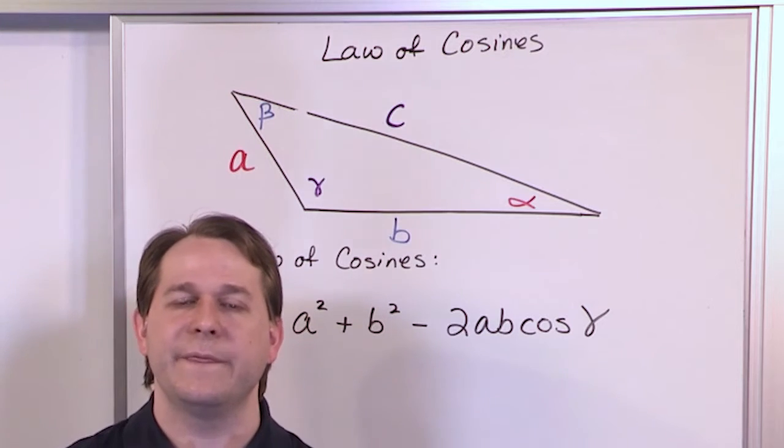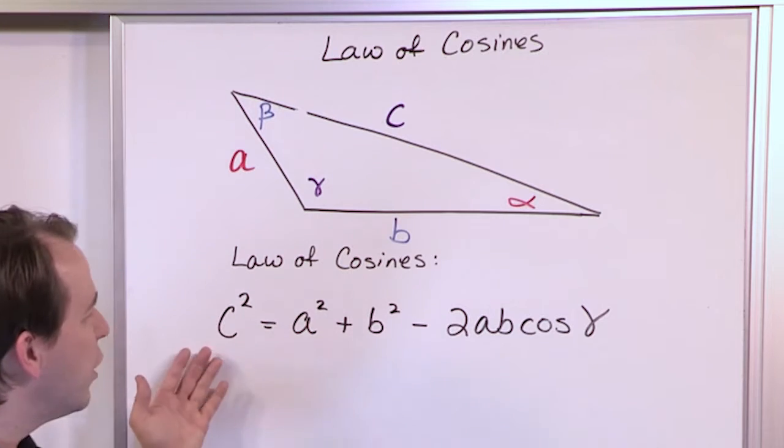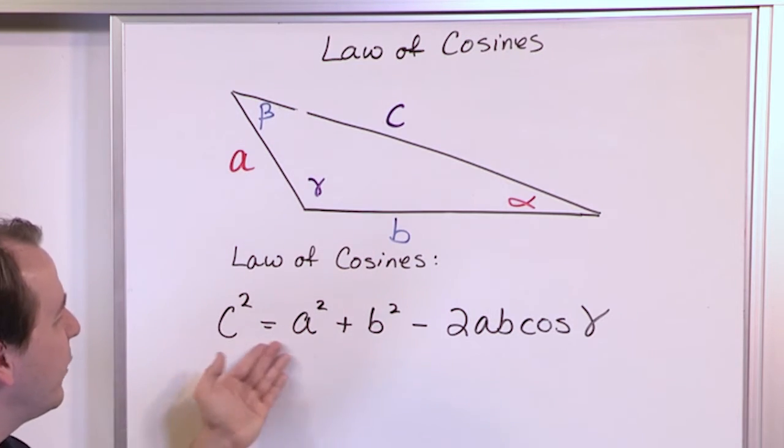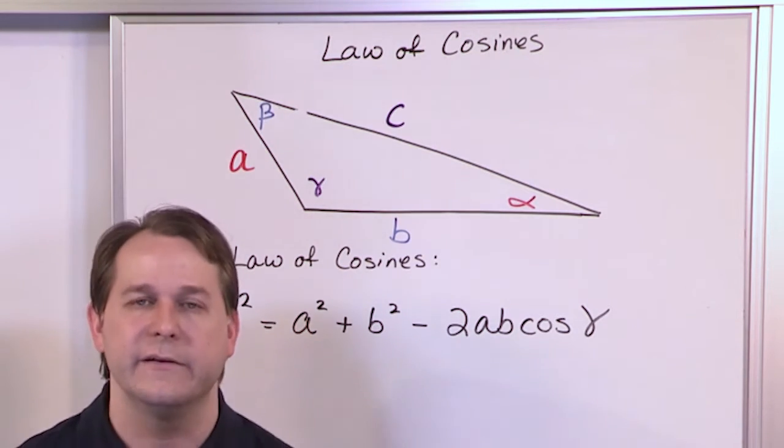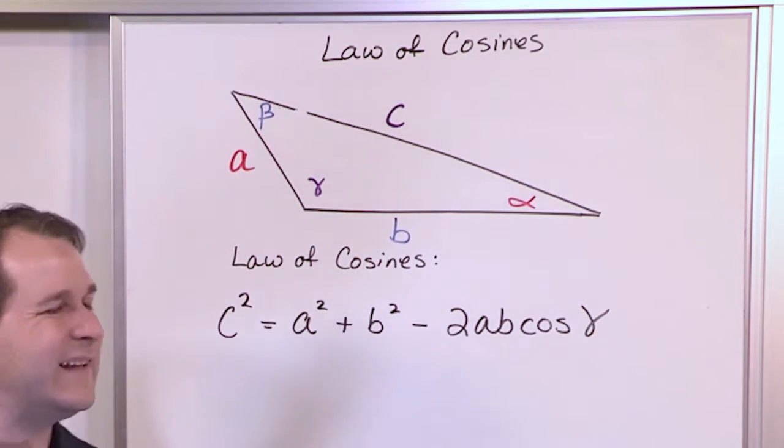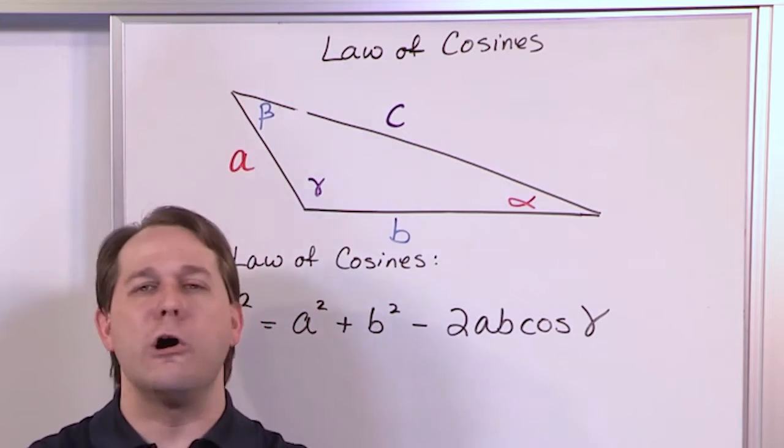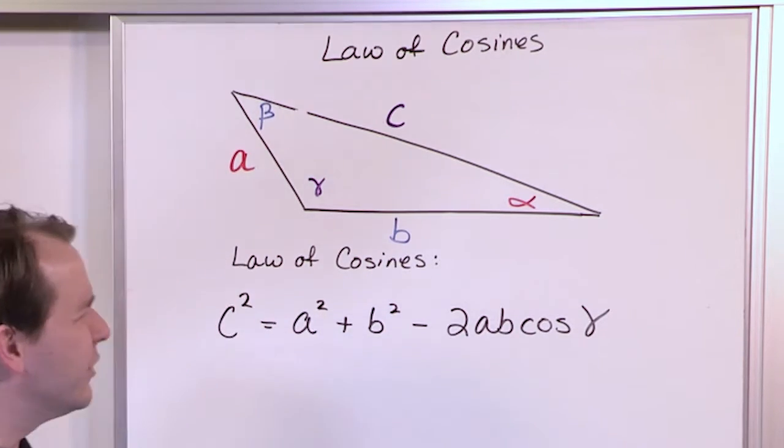Remember the Pythagorean theorem only works for triangles that have 90 degree angles, that are right triangles. The law of cosines is the Pythagorean theorem with this extra term at the end because it applies to all triangles. So literally the law of cosines is just a broader version of the Pythagorean theorem that works for all triangles.